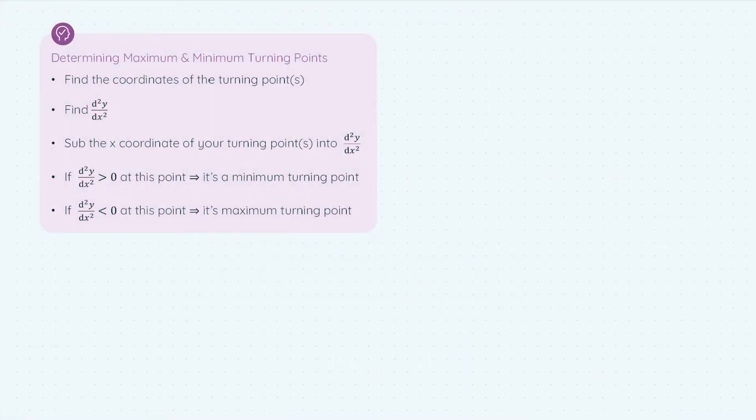In this video, we're going to look at another application of differentiation, and it is using differentiation to determine the maximum and minimum turning points of a function. So you could be given a function or a graph, and you'd be asked to find the maximum and the minimum turning points, and you'd have to be able to say which one's the max, which one's the min.